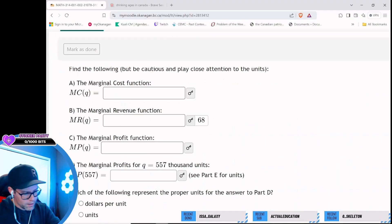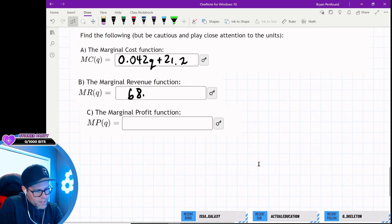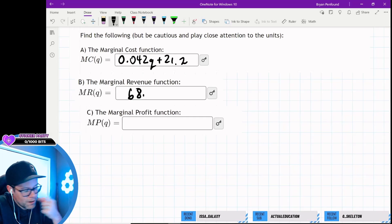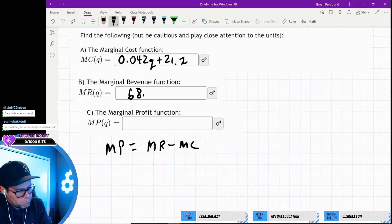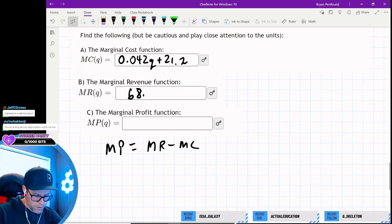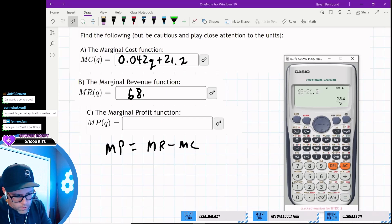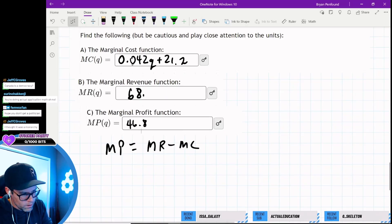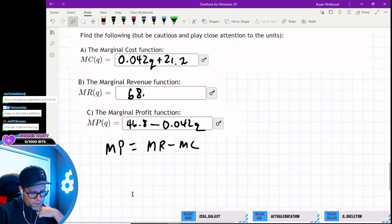Okay, that's what I thought. So the marginal revenue should be this, that makes sense. The marginal profit should equal the marginal revenue minus the marginal cost. So 68 take away 21.2, so that's going to be 46.8, and then we subtract 0.042Q. So that should be our marginal profit. That makes sense.